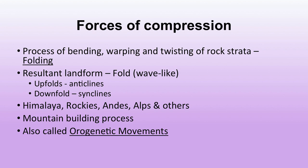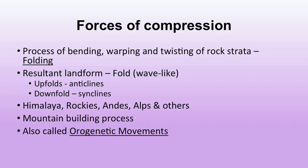The process of bending, warping and twisting of rock strata is known as folding. The resultant landform is a fold — a wave-like structure with upfolds and downfolds. The upfold is known as anticline and the downward portion is known as syncline. The Himalayas, Rockies, Andes, Alps etc. are examples of mountains formed through this process. It helps in the mountain-building process and is therefore also known as orogenetic movement. This fold with its anticlines and synclines can be seen in the diagram.